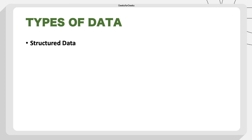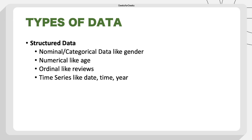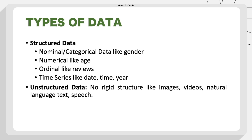Then comes the type of data. First is structured data — examples include nominal or categorical data, numerical data like age or salary, and ordinal data where there is order but still in categorical form, like reviews rated one to five or feelings ranging from very sad to very happy. Then there is time series data — for example, if you are predicting stock prices, you need data from previous months and years.